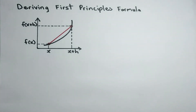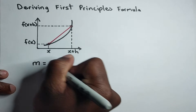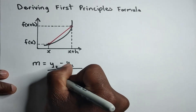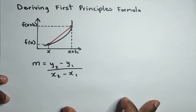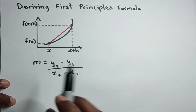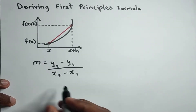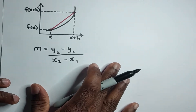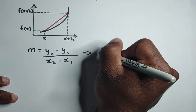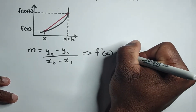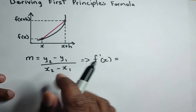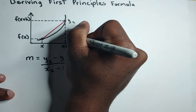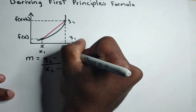We can use the gradient formula m equals y2 minus y1, the difference in y over the difference in x. Remember that gradient formula — we can use it to find the gradient of this thing. And remember, m is the same thing as f prime of x. So I'm going to use f prime of x in this scenario. Looking at this formula, our y2 would be f of x plus h, our y1 would be f of x, our x1 would be x, and our x2 would be x plus h.